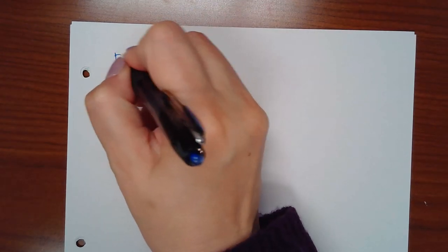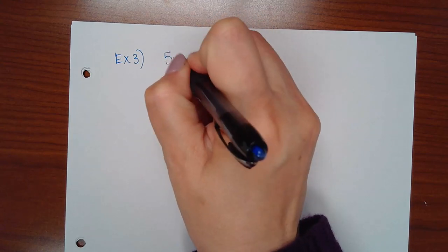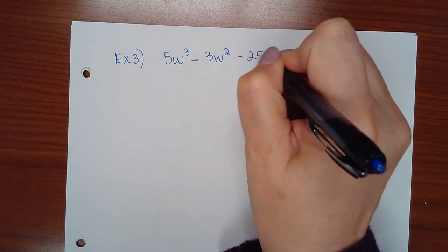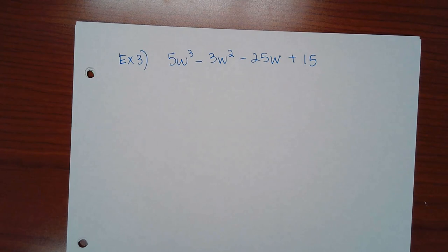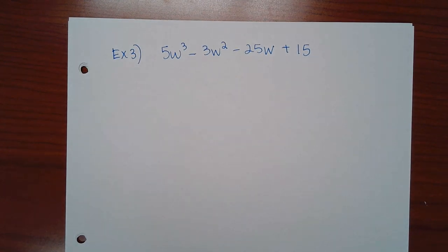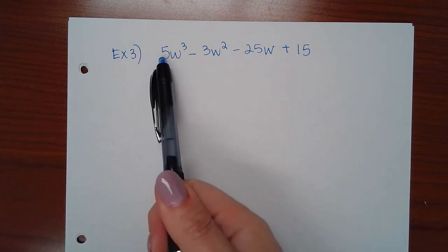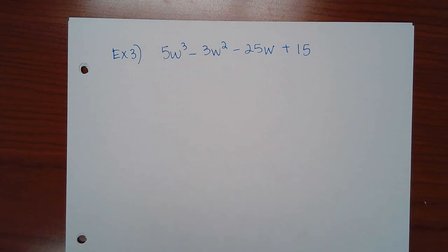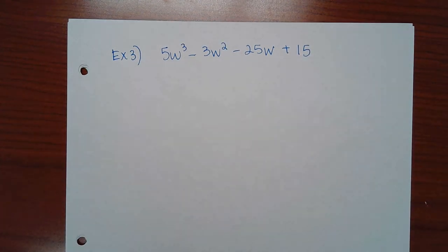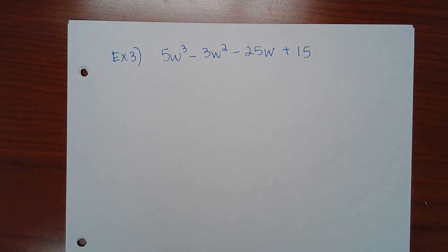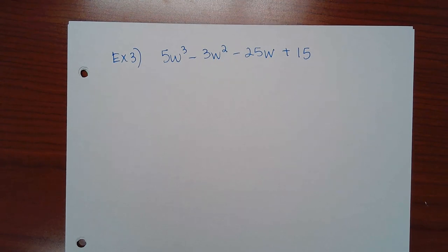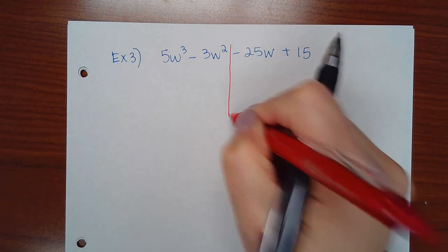Here's another grouping example. First check for a GCF among all four terms: 5, 3, 25, and 15 can't all be divided by the same number, and not all terms share a w, so there is no GCF. Counting four terms means we use grouping. Split the problem in half, remembering the minus sign belongs to the 25.